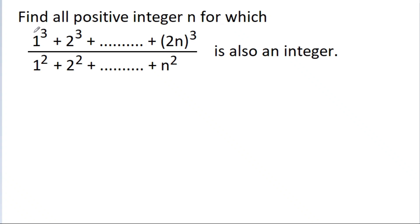In this video, we have to find one positive integer n for which 1³ plus 2³ plus up to (2n)³, divided by 1² plus 2² plus up to n², is also an integer.